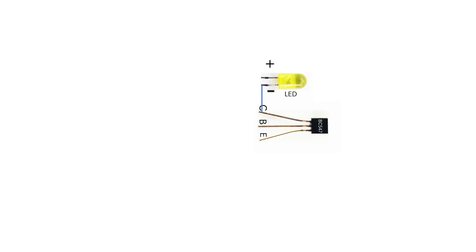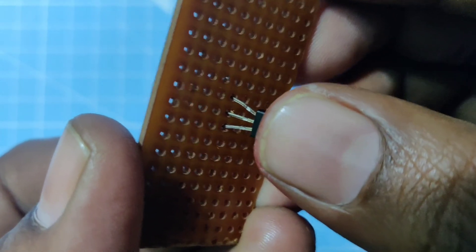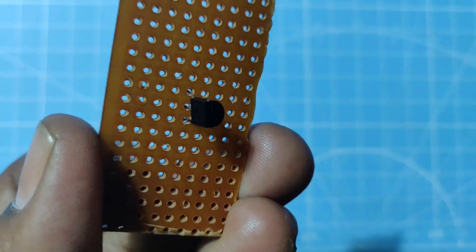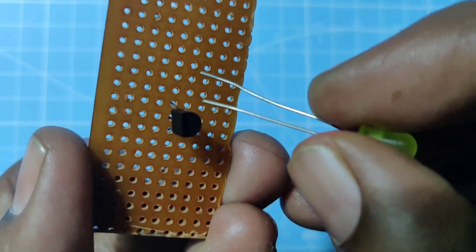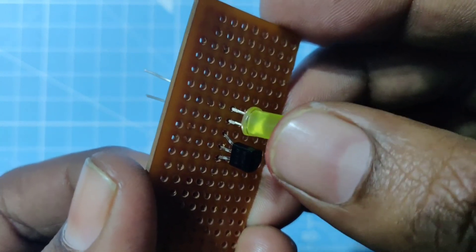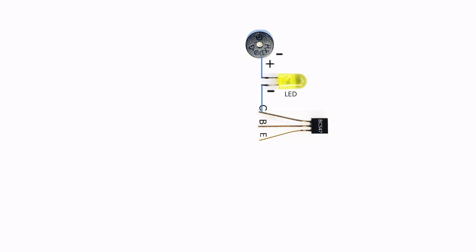Connect the negative terminal of the LED to the collector pin of the transistor BC547. Connect the negative terminal of the buzzer to the positive terminal of the LED.